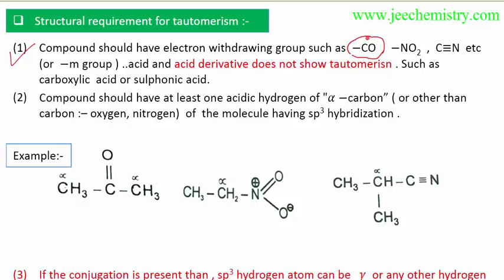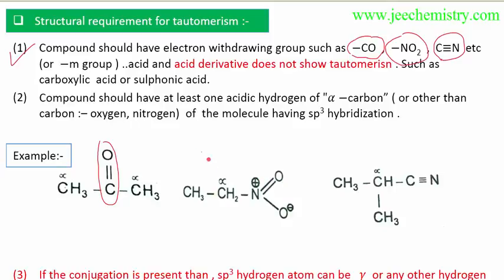If the compound has such type of electron-withdrawing group, then it can show tautomerism. Here I have some examples: C=O groups, NO₂ groups, and C≡N groups. These types of groups have the capacity of electron-withdrawing, and if this type of group is present in the compound, it can show tautomerism. But compounds like carboxylic acid and sulfonic acid do not show tautomerism.